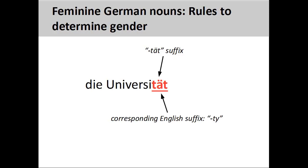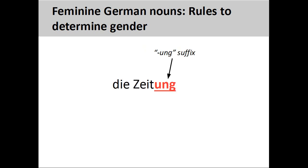Nouns ending in –tät, such as 'Universität,' meaning university, are always feminine. These endings usually have a corresponding English suffix, such as –ty. Nouns ending in –ung, such as 'Zeitung,' meaning newspaper, are always feminine.